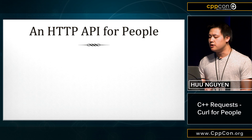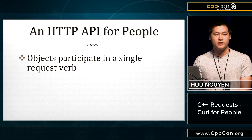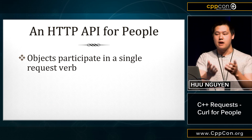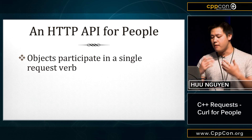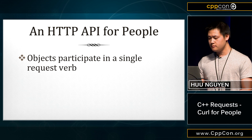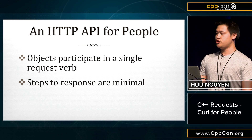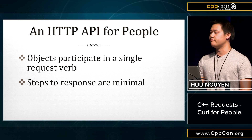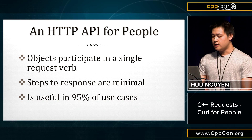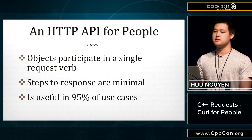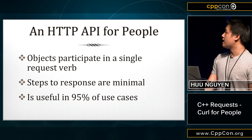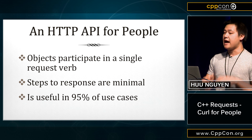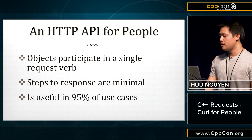What I want — and what I built — is an HTTP API for people. It's client-side, and I want the objects in this API to participate in a single request verb. That means the way you map your programmer intent is through a single function call, using the objects to modulate what happens inside the internals of that call. I also want the steps to get the response to be minimal — you shouldn't have to jump through hoops or do stream copying to get the response. And finally, I want it to be useful in 95% of use cases.